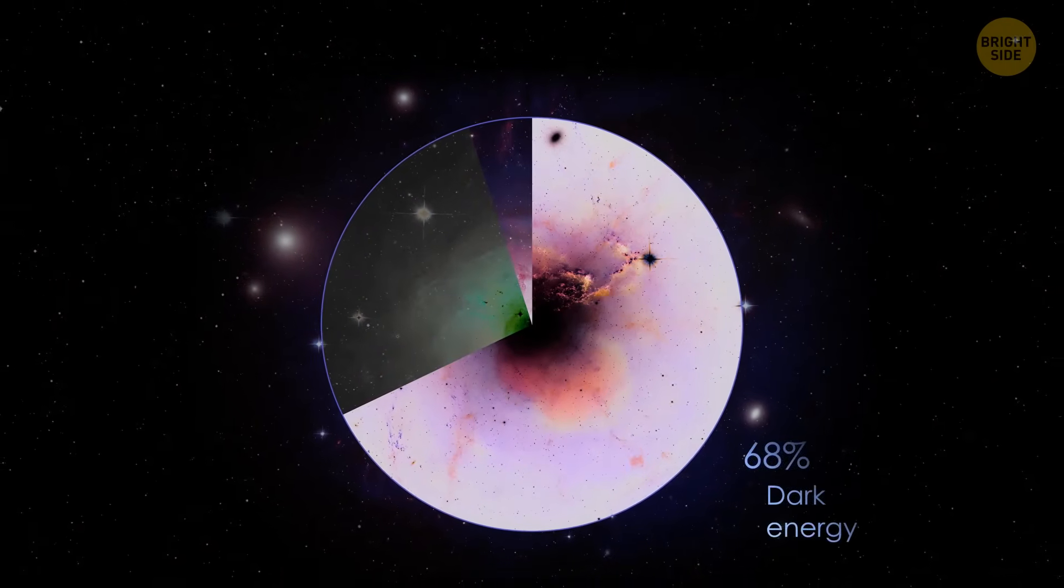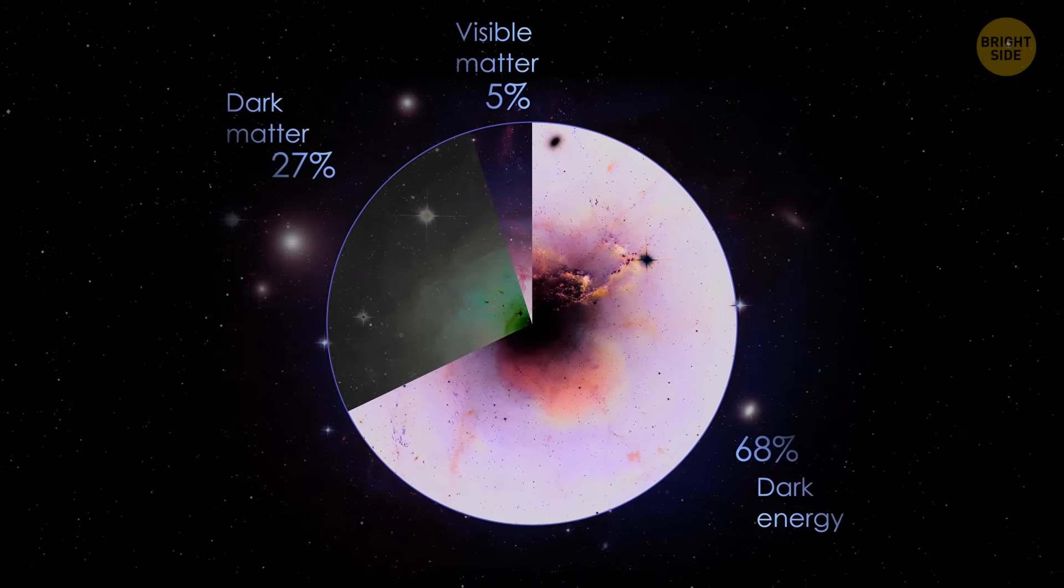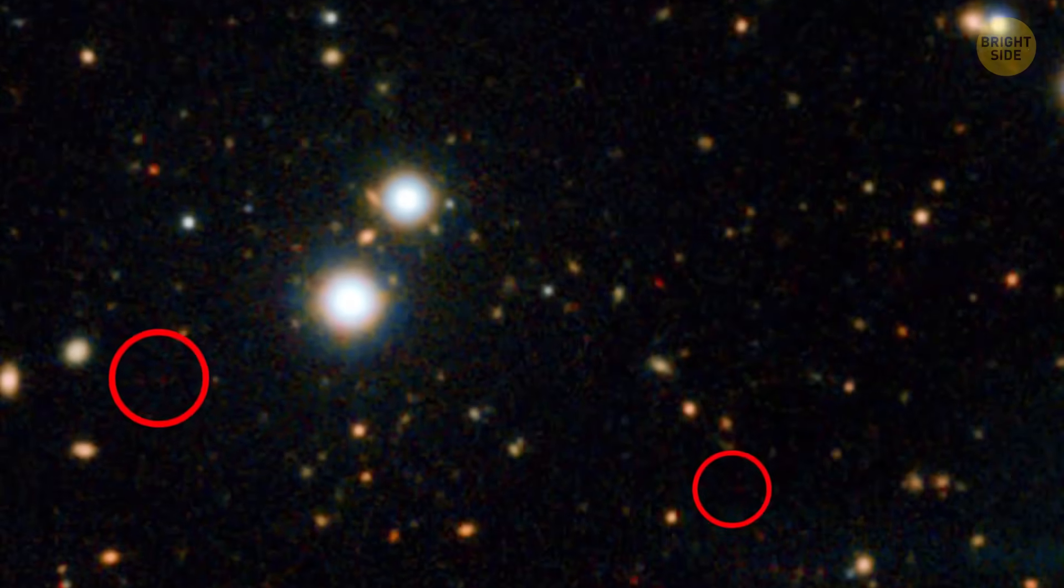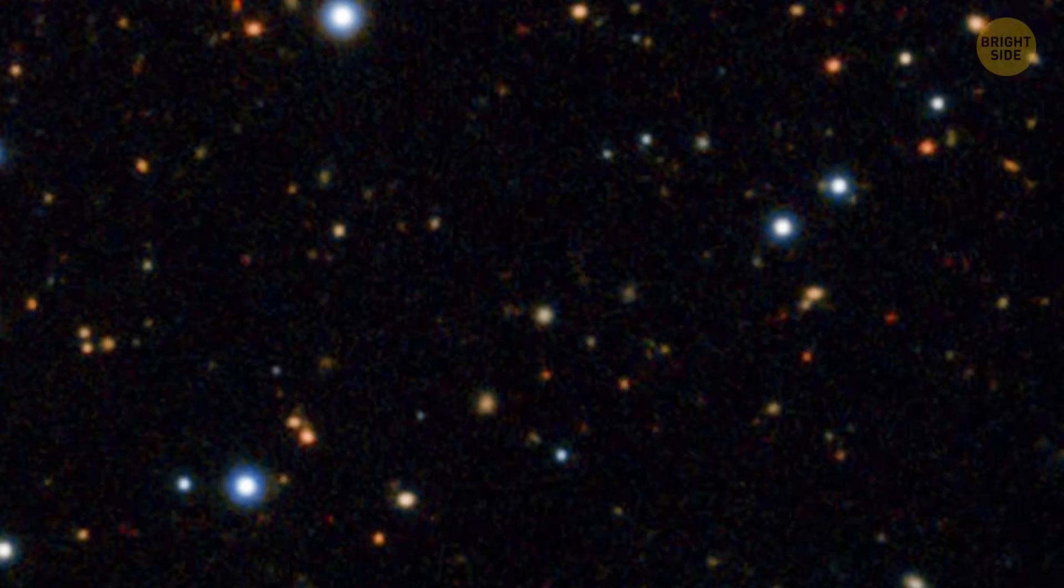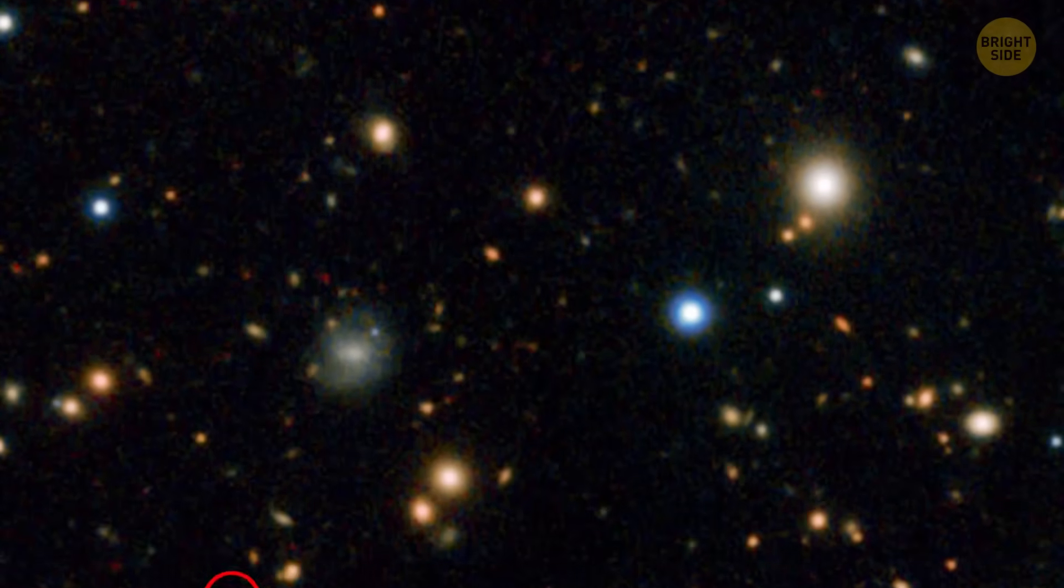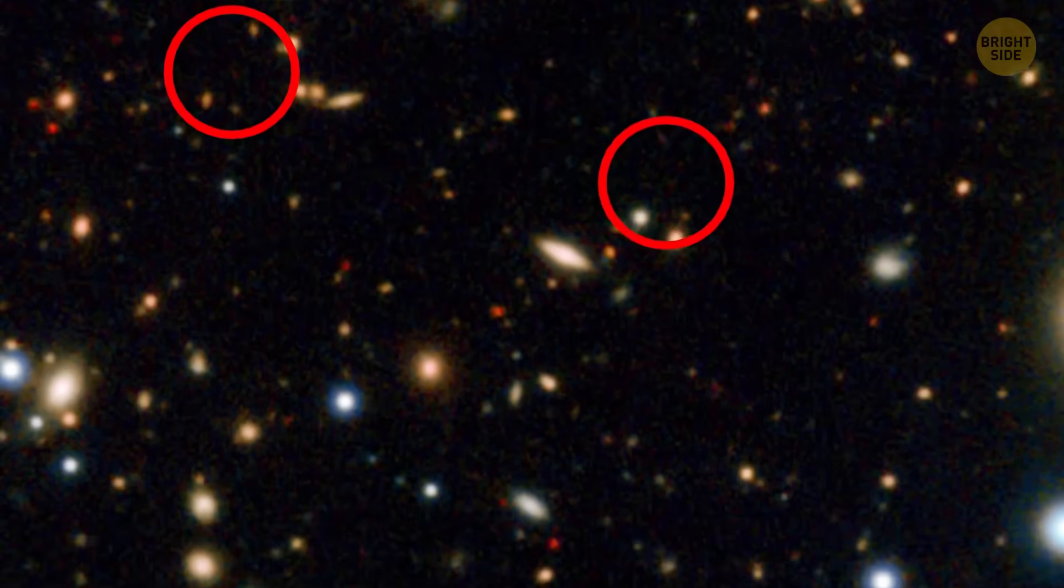Eventually, they narrowed it down to 368 possible suspects. They checked those, and only 7 stars remained. These stars show strange light patterns that we really can't explain yet.